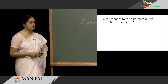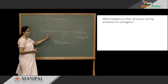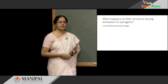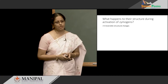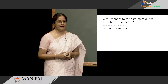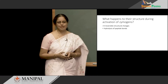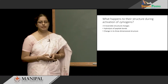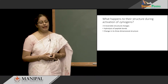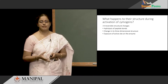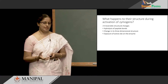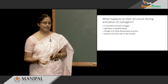Now let us see what happens to the structure of Zymogens as they get activated to their active form. When Zymogens get activated, they undergo irreversible structural change. This involves hydrolysis of peptide bonds, which results in release of short peptides, a change in the overall three-dimensional structure of the molecule, and that brings the active site of the enzyme to its surface, making the active enzyme fully active.